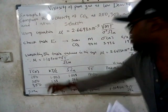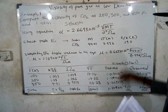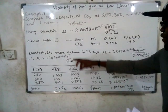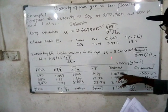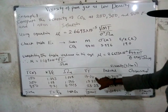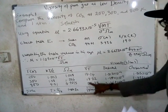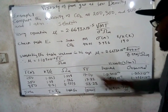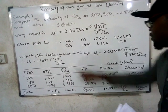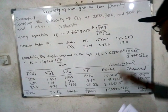Next, compute √T for each temperature: √200 gives the first value, √300 gives the second, and √800 gives the third. Now substitute into the reduced formula μ = 1.10995 × √T / Ω_μ for each temperature: insert the corresponding √T and Ω_μ values and solve to obtain each predicted viscosity.